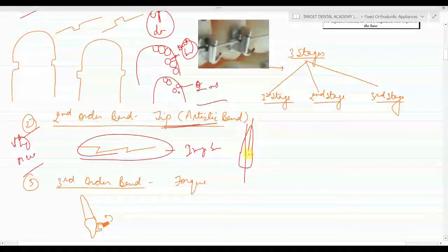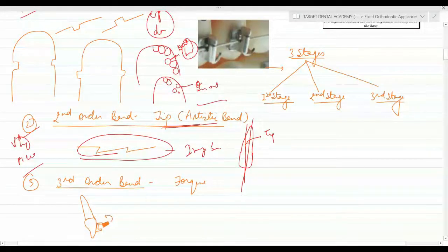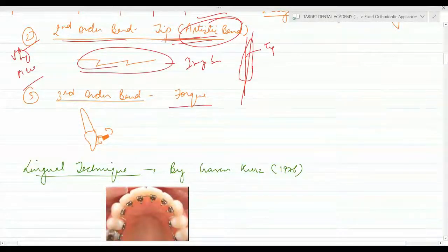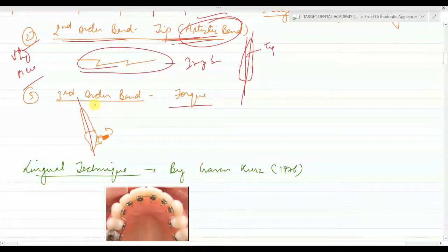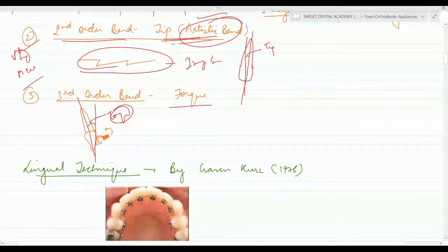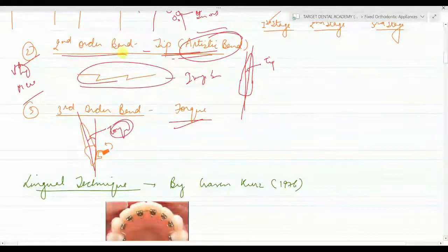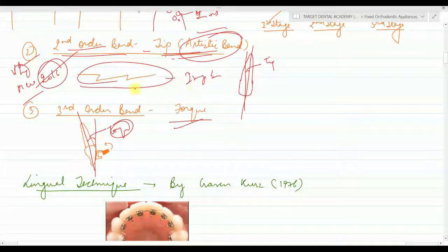The second order bend relates to tip along the long axis of the tooth, also called the artistic bend. The third order bend is the torque — the bucco-lingual movement. So first order bend is your in-out bend, second order bend is your tip bend — this was in the 2016 exam — and the third order bend is your torque bend.